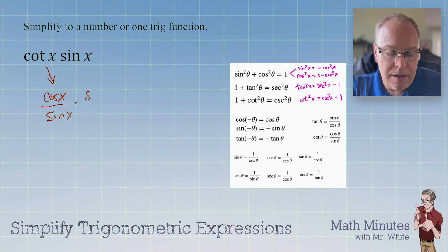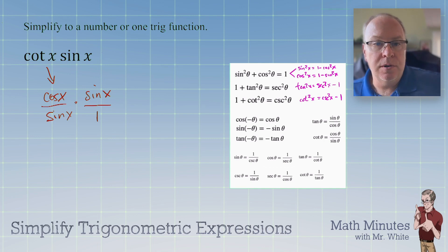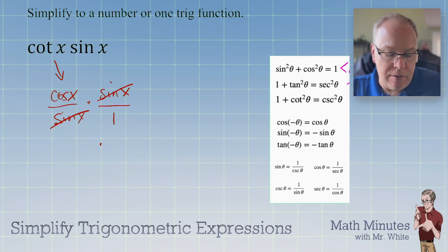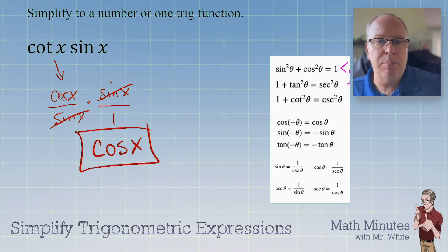And we're multiplying by sine. And that's all over one, of course, if you write it as a fraction. Alright. So what's going to happen now when you multiply those two fractions, before you multiply, of course, you can cross cancel. And this whole thing just boils down to cos x. And that's your answer. See how I boiled it down to a single trig function without too much trouble.